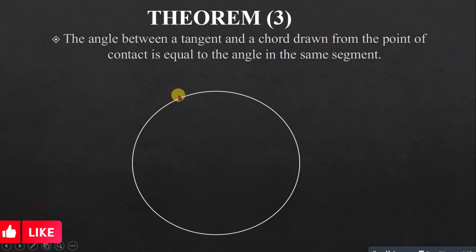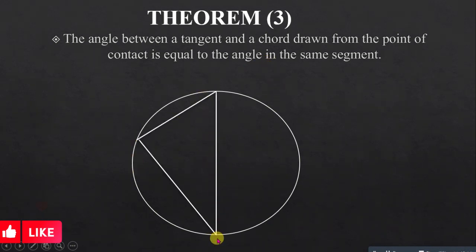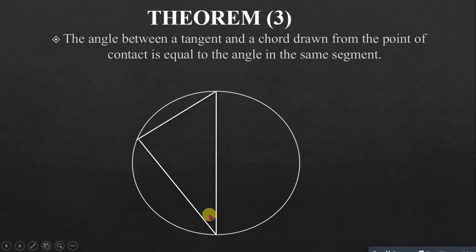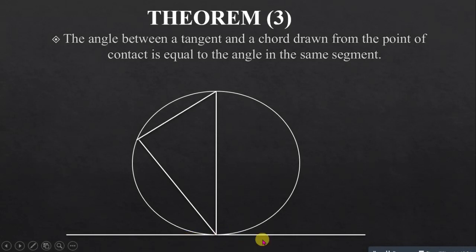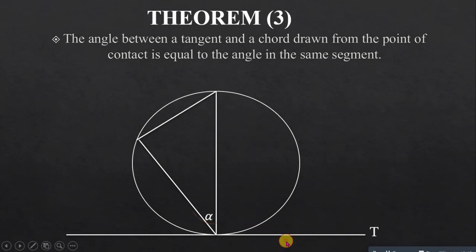Another theorem: the angle between a tangent and a chord drawn from the point of contact is equal to the angle in the alternate segment. We have a circle with a diameter drawn, so the angle subtended by the diameter at the circumference is 90 degrees. A tangent is a line touching the circle at one point. If the angle between the tangent and chord is alpha, and the angle in the alternate segment is beta, then alpha equals beta.